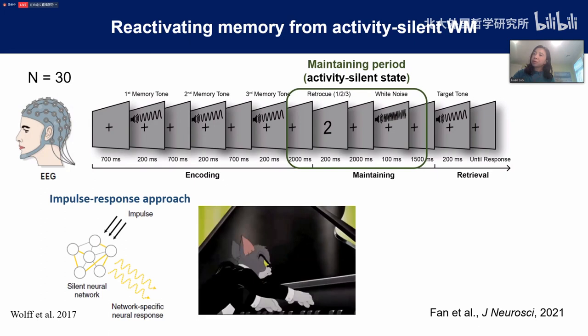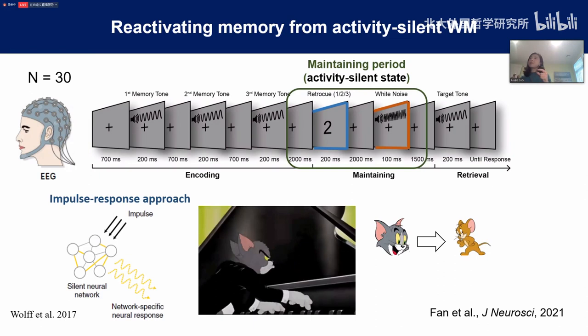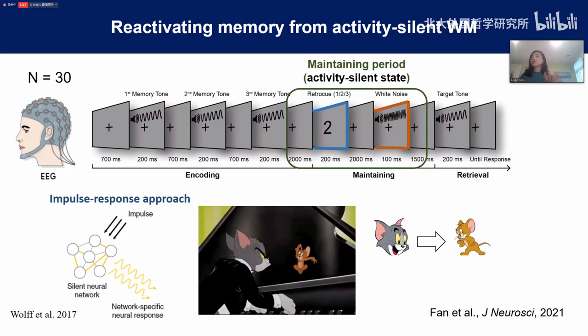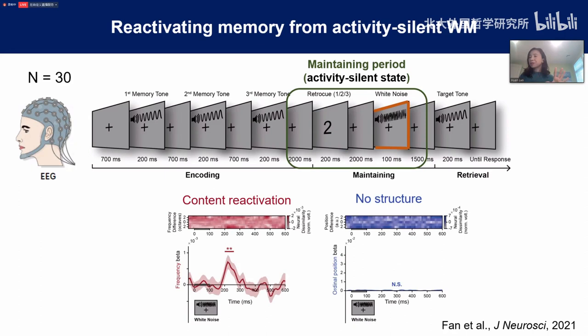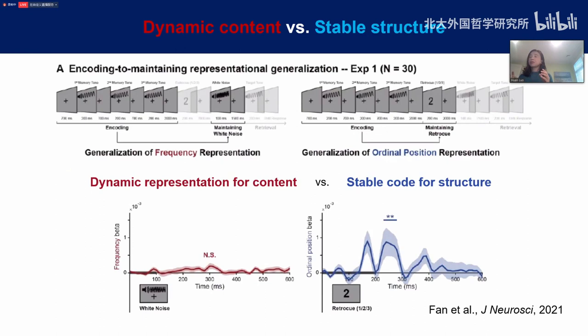During the maintaining period, we present two triggering events — like Tom's punch to the piano. We try to see whether these triggering events could reactivate either content or structure information from the memory system. The first triggering event reactivates structure information but not content information. The second triggering event, a pure white noise, reactivates content information but not structure information. This already suggests that content and structure are stored in a dissociated way in working memory. Moreover, content seems dynamic in nature — its coding characteristic changes over time — while structure seems to be kept stable.